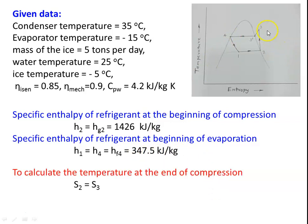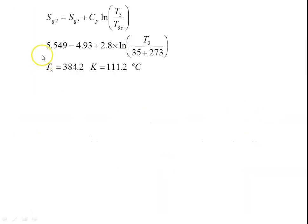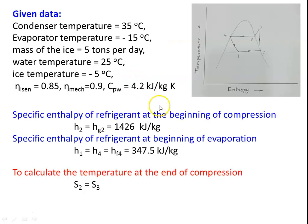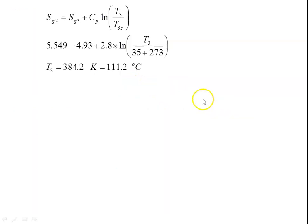To find superheated vapor temperature at end of compression, using S2 equals S3 (isentropic). S2 equals SG2 equals SG3 plus Cp·ln(T3/T3s). Substituting: 5.549 equals 4.93 plus 2.8 into ln(T3/(35 + 273)). Solving gives T3 equals 384.2 Kelvin, or 111.2 degrees Celsius. This is the discharge temperature from the compressor.